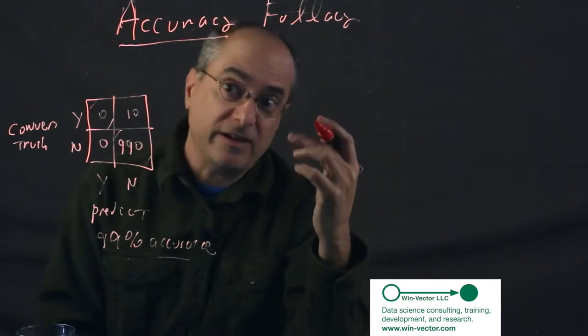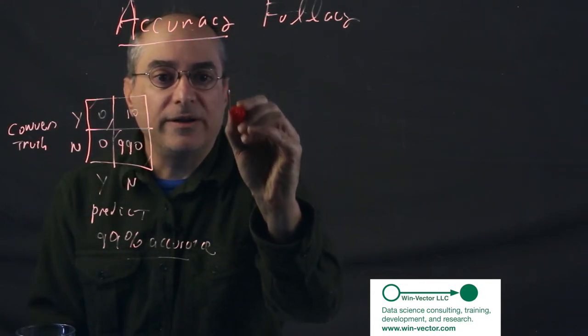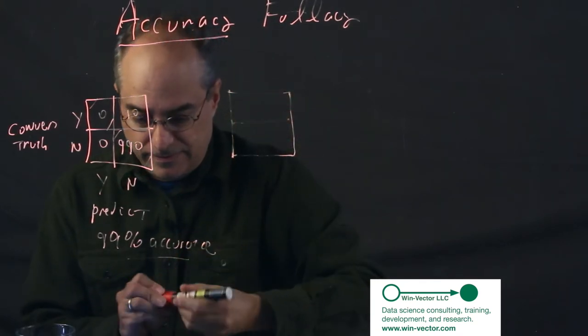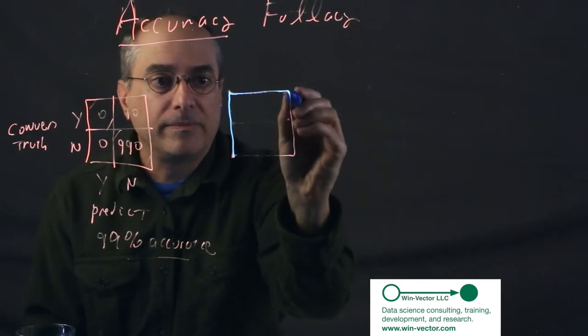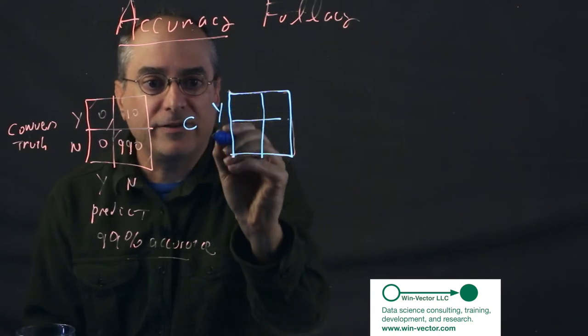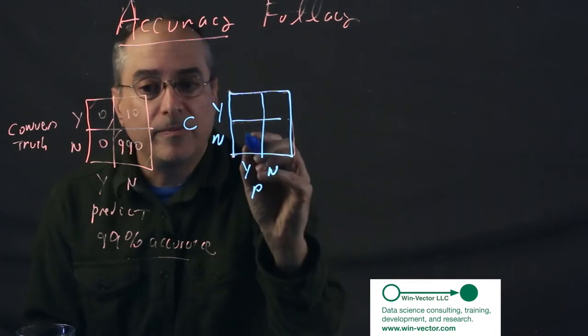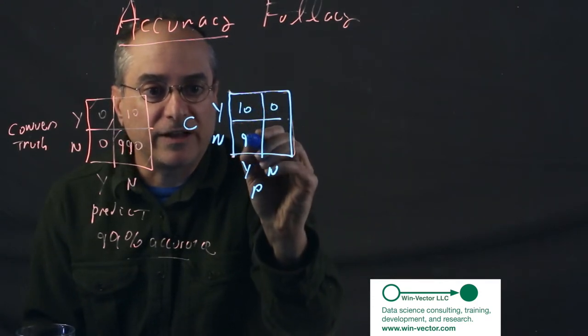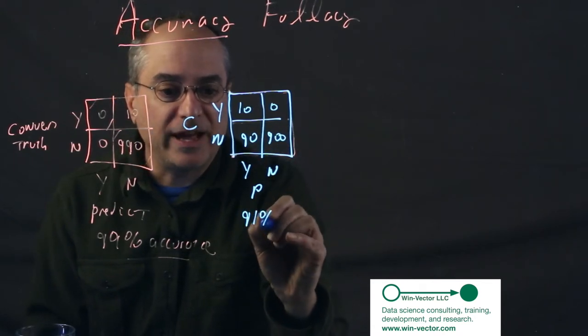It didn't send out or advise sending out any of the marketing literature. Whereas this one, we could imagine, convert yes, no, predict yes, no. Maybe this could have happened if we'd run a different classifier. This one is only 91% accurate.